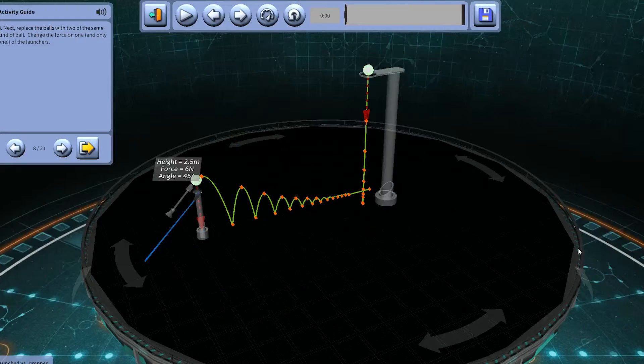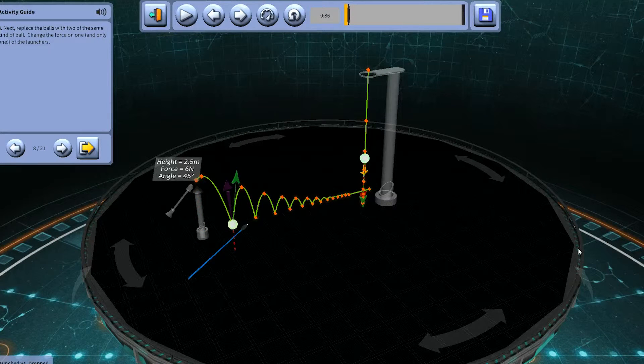And remember, you can use the review mode to slow down the experiment and see precisely when a ball hits the ground.